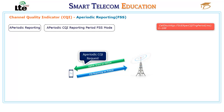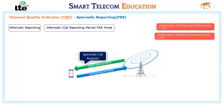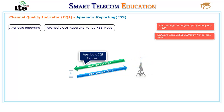The CQIs that are aperiodically reported are only valid for a period of time specified by the FSUE aperiodic subband CQI validity period parameter. If a UE in FSS mode does not use the reported resources within this period of time, these CQIs are considered invalid. If this validity period parameter is set to a value at least equal to the FSUE aperiodic CQI triggering period, then FSS is more likely to be selected for the UEs.